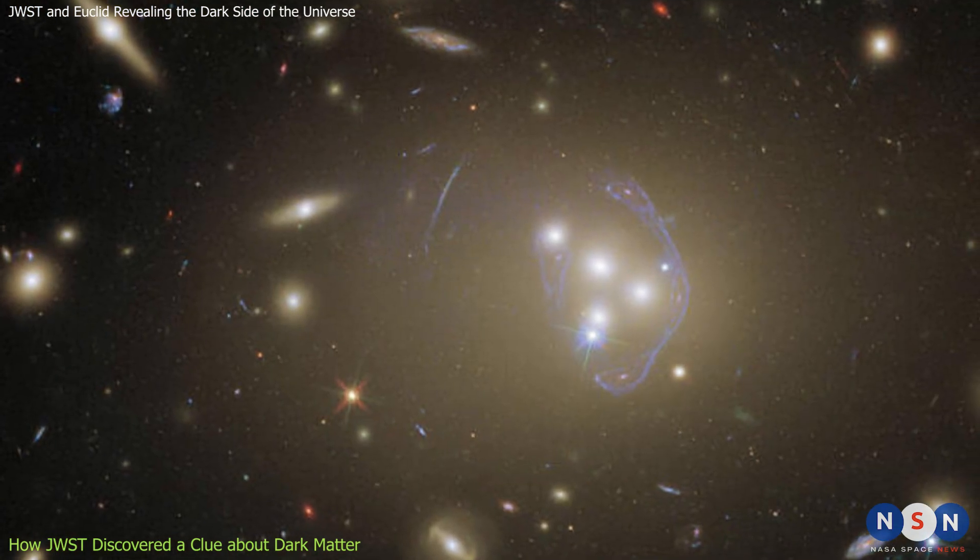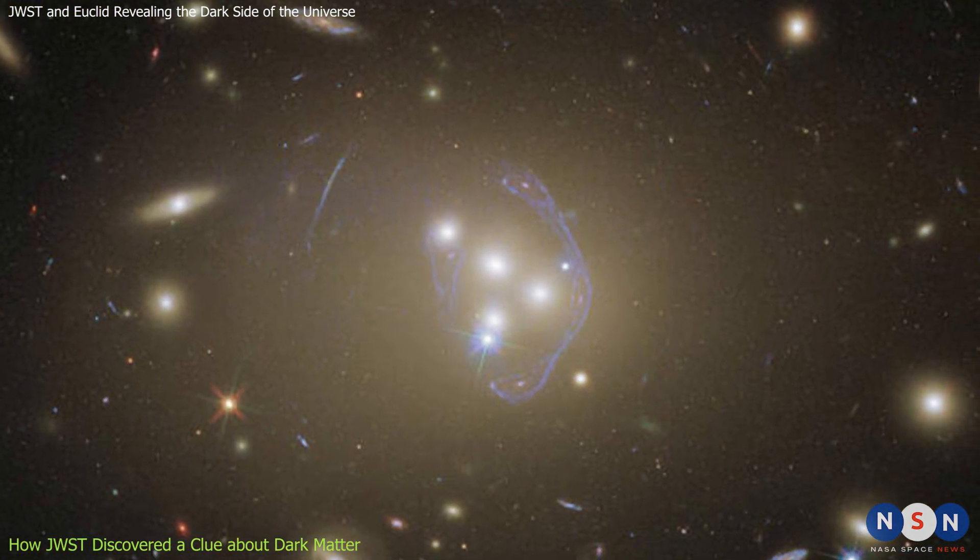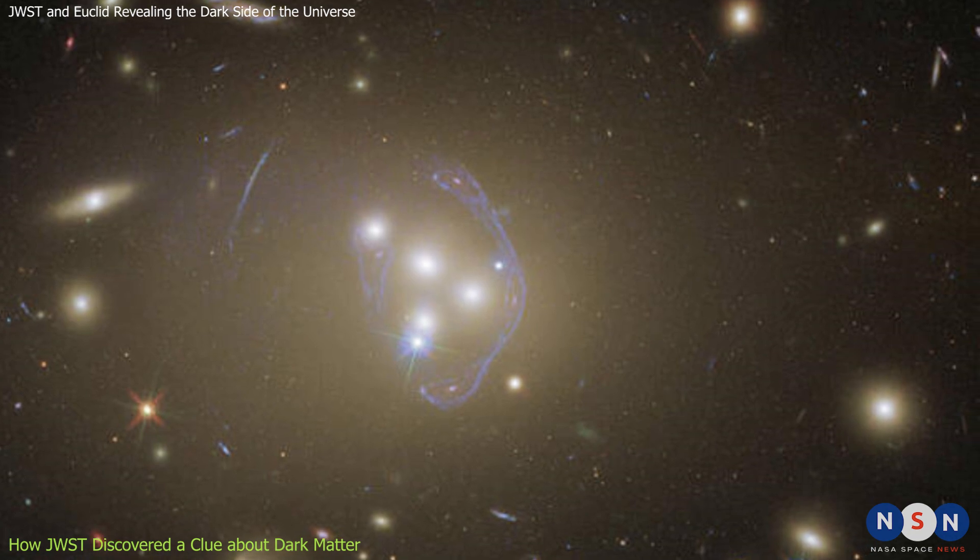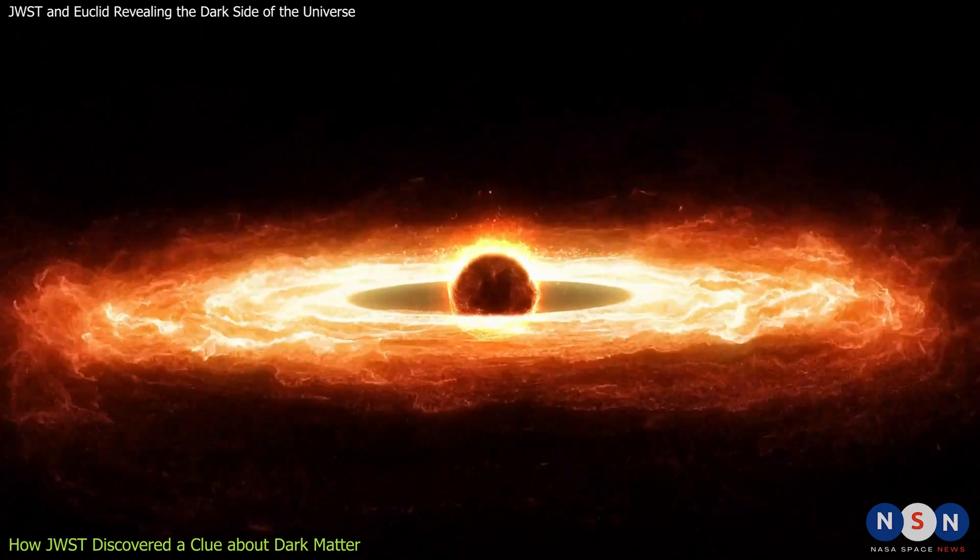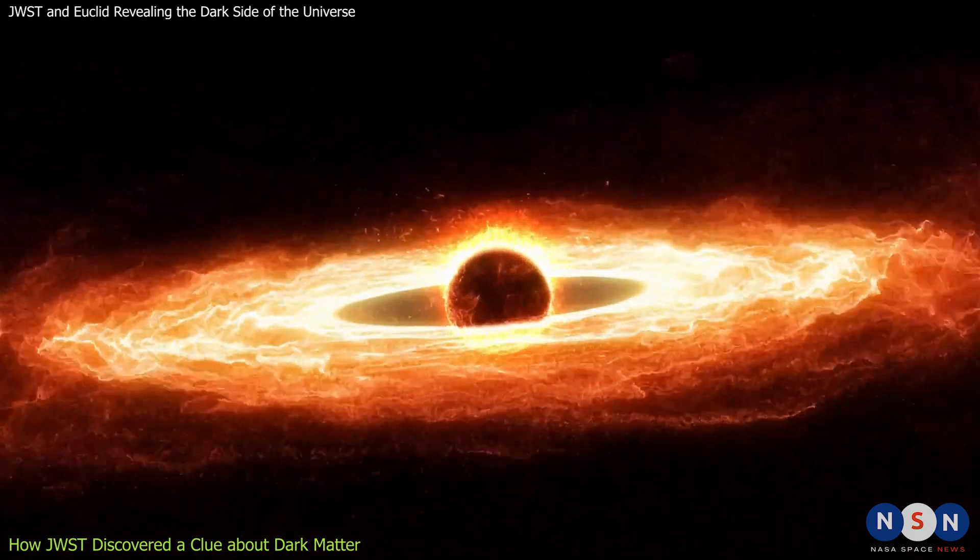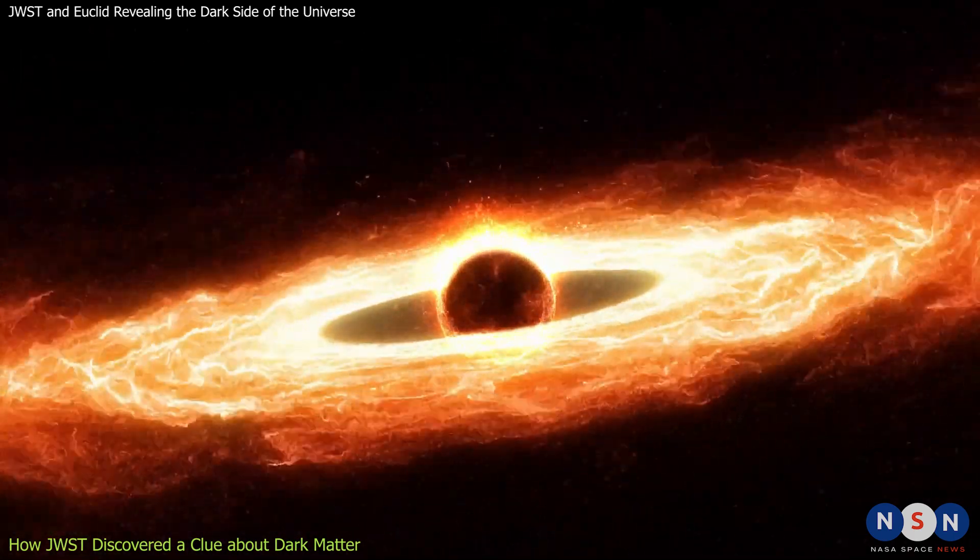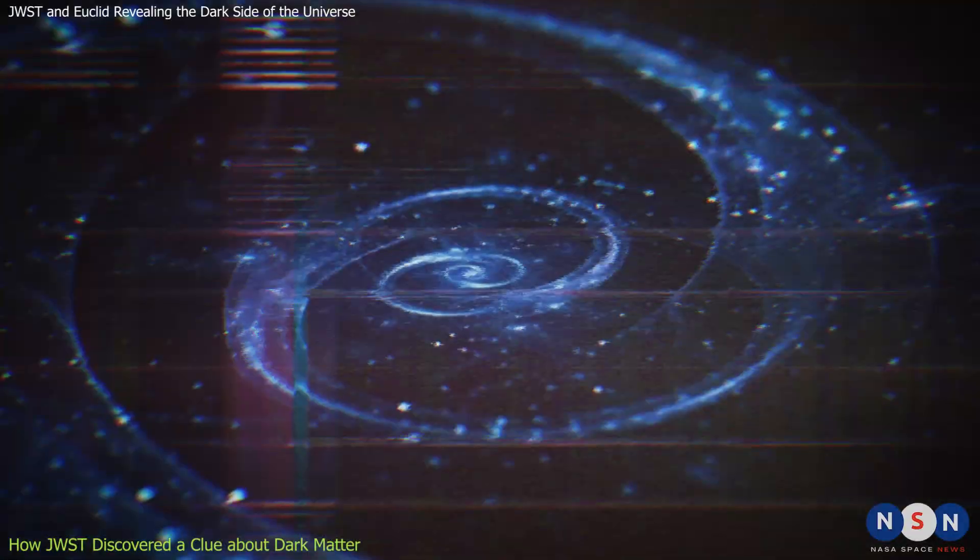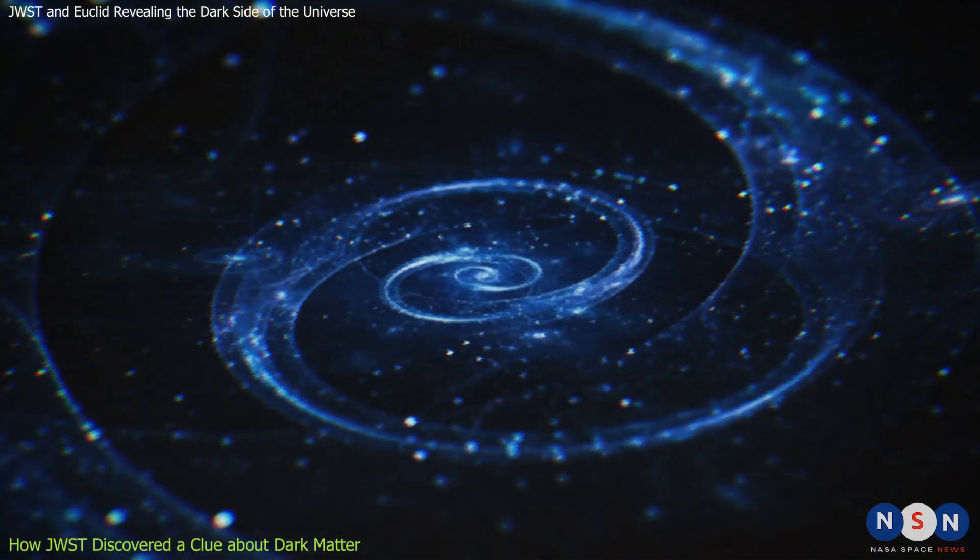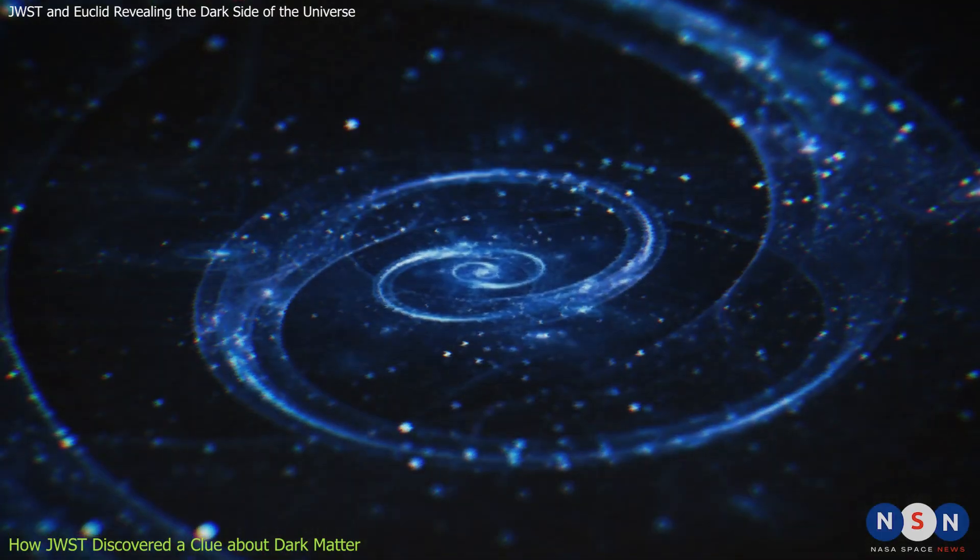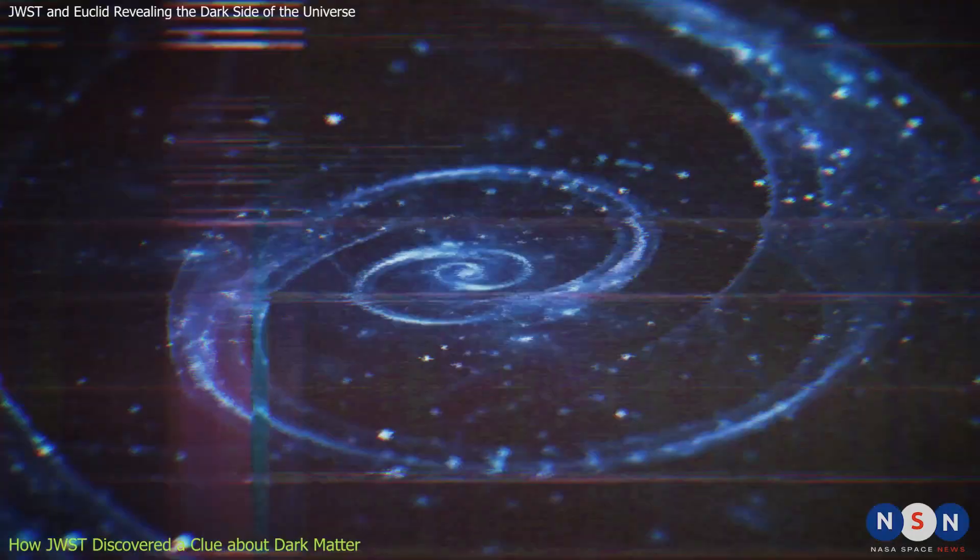This finding is important because it could provide clues about what dark matter is made of and how it behaves. If dark matter only interacts with gravity, as most theories assume, then it should not experience any friction or drag from other forces or particles. But if dark matter interacts with something else, such as itself or some unknown force or particle, then it could slow down or deviate from its expected path.